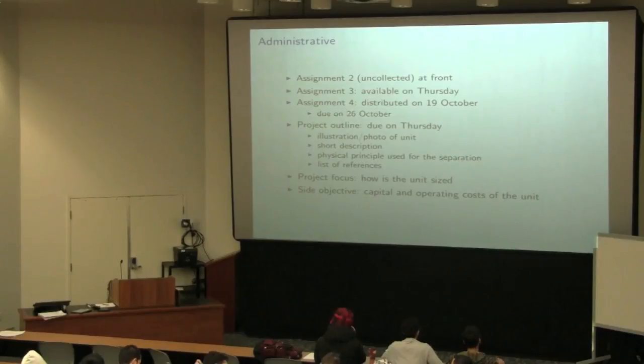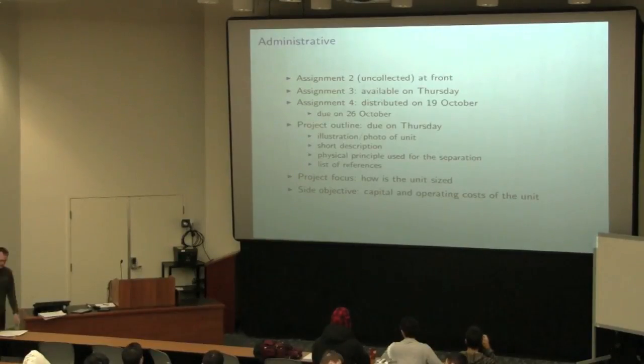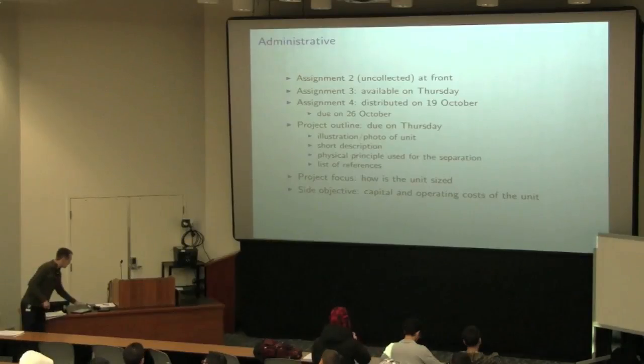Company websites are generally okay, government websites, government agencies are fine as well. There's a good set of references on the course website like the Owens Encyclopedia, Perry's Handbook. The project's focus is primarily on how units are going to be sized, and there's a side objective to talk about capital operating costs. Any questions on that so far? The project outline is due electronically on Thursday.